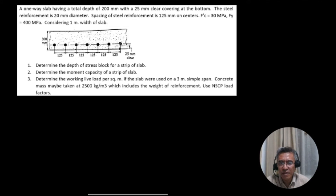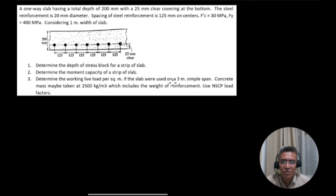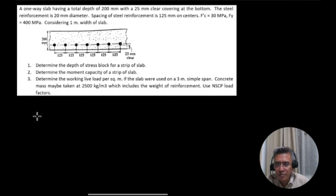Determine: (1) the depth of the stress block for a strip of slab, (2) the moment capacity of a strip of slab, and (3) the working live load per square meter if the slab is used on a 3-meter simple span. Concrete mass is taken as 2500 kg/m³ including the weight of reinforcement. Use NSCP (National Structural Code of the Philippines) load factors.